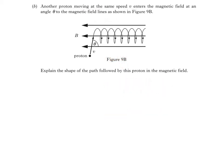This is part B of the question. Another proton, moving at the same speed V, enters the magnetic field at an angle theta to the magnetic field lines, as shown in figure 9B. Explain the shape of the path followed by this proton in the magnetic field. So what the proton does is this. It follows what we call a helical path.